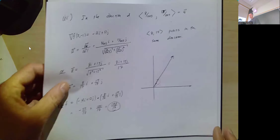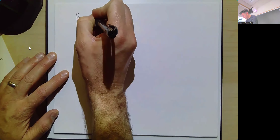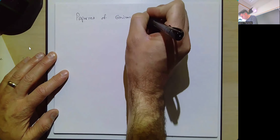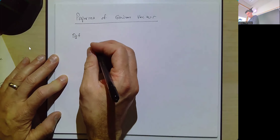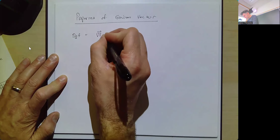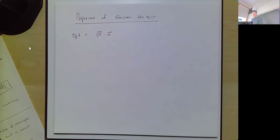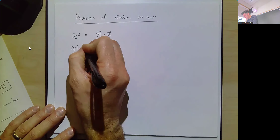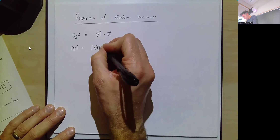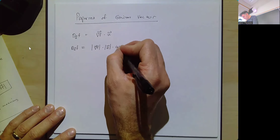Let's talk about some properties of the gradient vector. Recall that the directional derivative of f in the direction of unit vector u equals the gradient of f dotted with u. There's another way to compute the dot product: it equals the magnitude of the first vector times the magnitude of the second vector times the cosine of the angle between them.